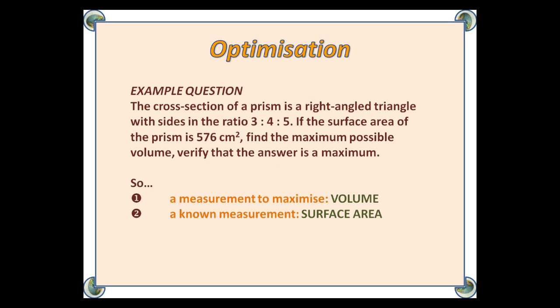Here's an example question. The cross-section of a prism is a right-angled triangle with sides in the ratio 3 to 4 to 5. If the surface area of the prism is 576 centimetres squared, find the maximum possible volume and verify that the answer is a maximum.